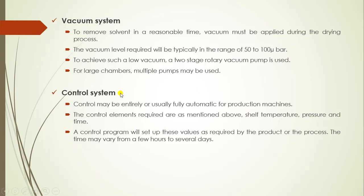Next is the control system. The control system may be entirely or usually fully automatic for a production machine. It is a computerized system which maintains each and every function of the system. The control elements required are cell temperature, pressure, and time. A control program will set up these values as required by the product or the process, and the time may vary from a few hours to several days.